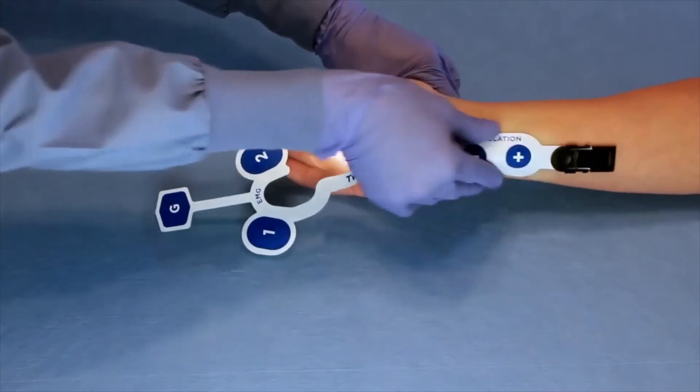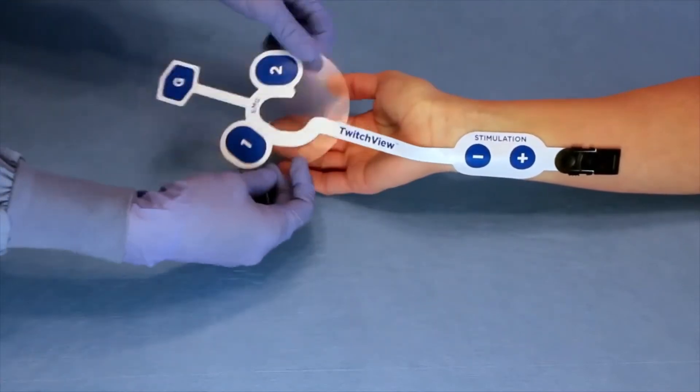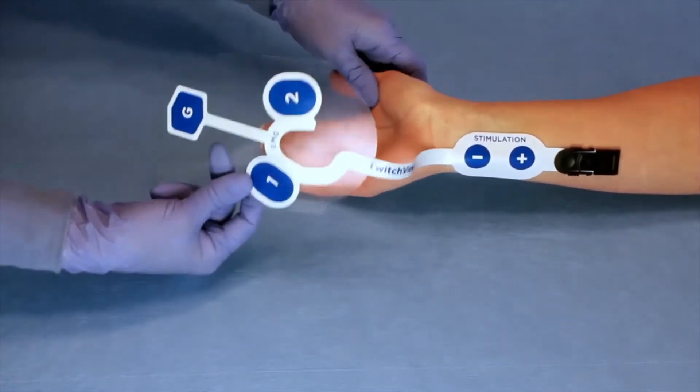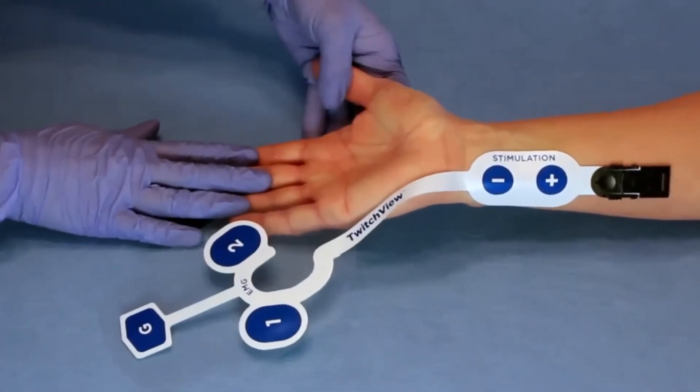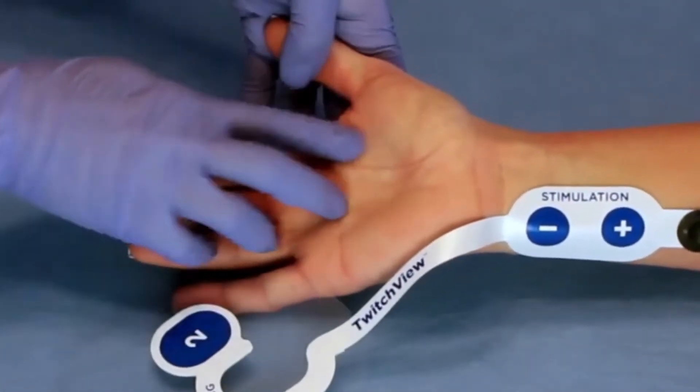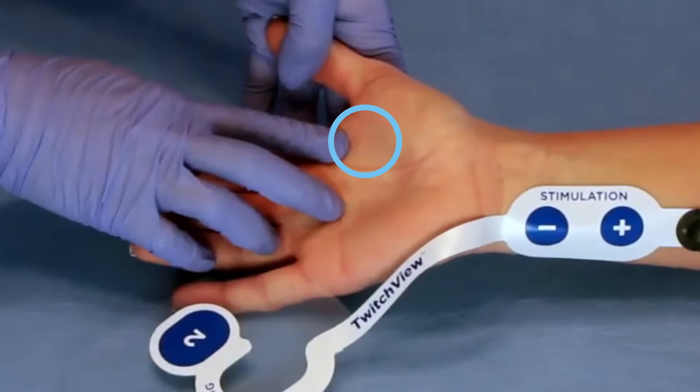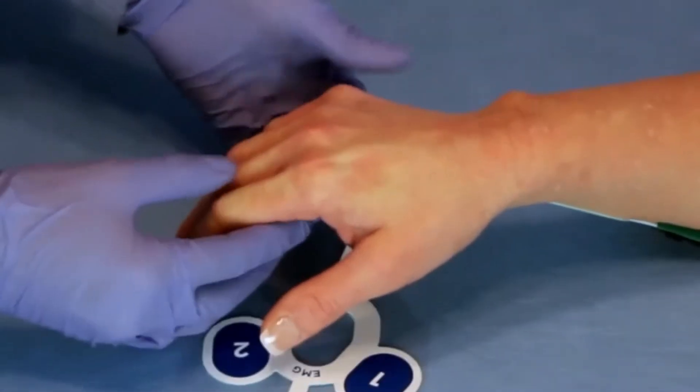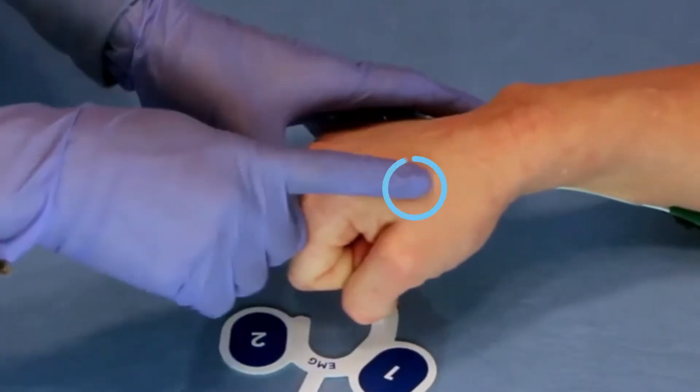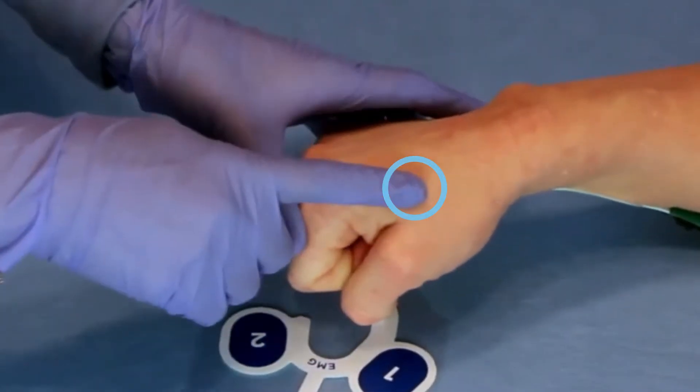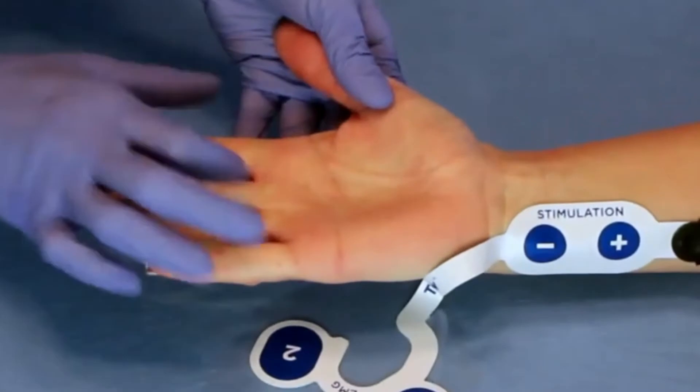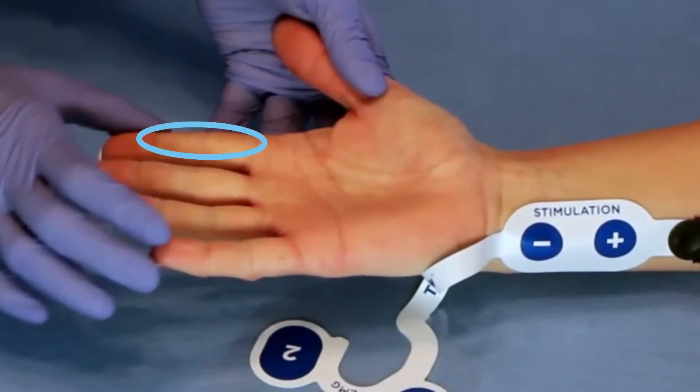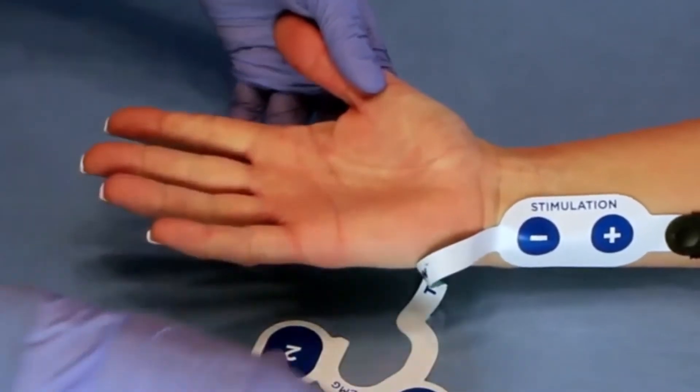Press down firmly to ensure adhesion. The EMG or electromyography recording electrodes are placed over the adductor pollicis just distal to the thenar eminence and on the first dorsal interosseous muscle on the back of the hand. The ground electrode is placed on the index finger.